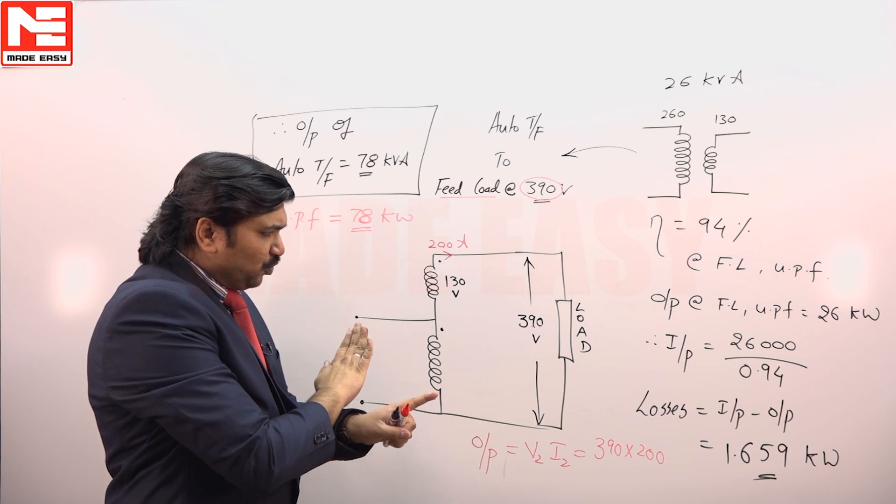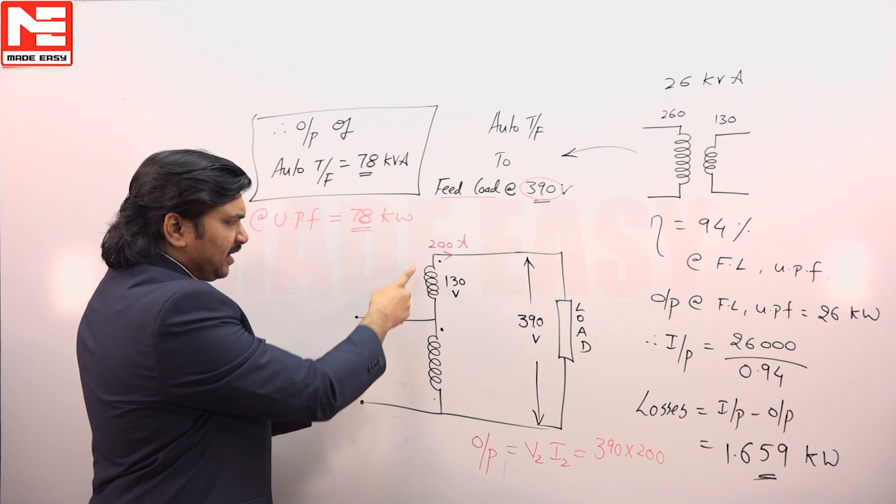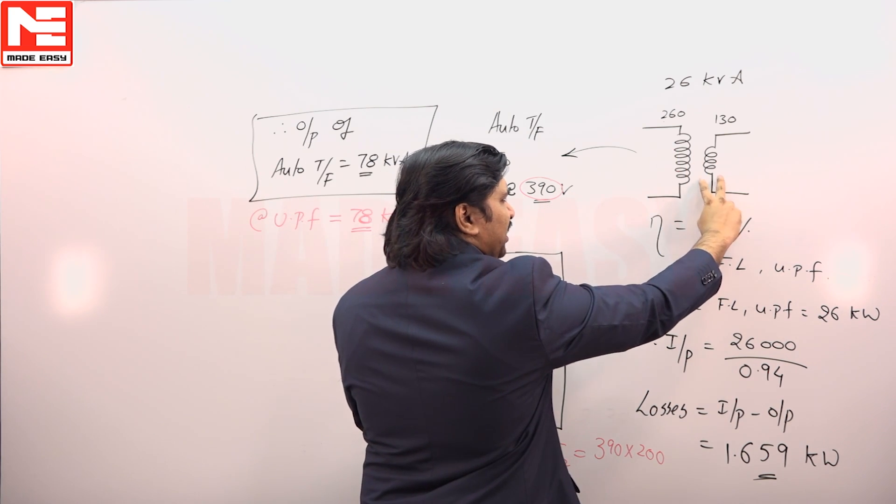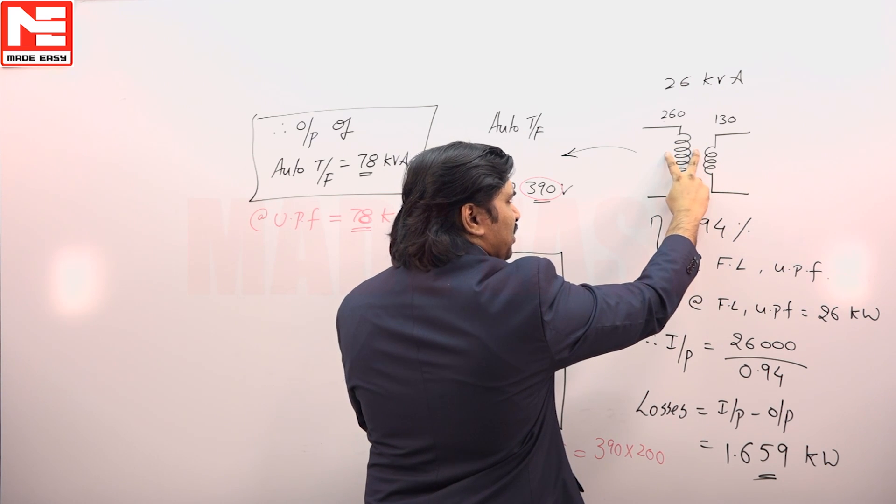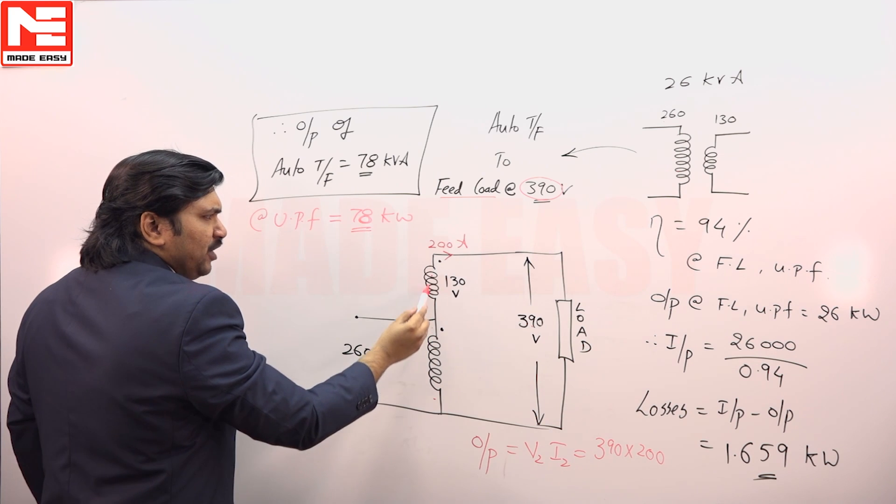No change in voltage. Next, current rating of this winding - current rating of this winding when it was a two winding transformer, this winding current rating is 200 amperes, this winding current rating is 100 amperes.